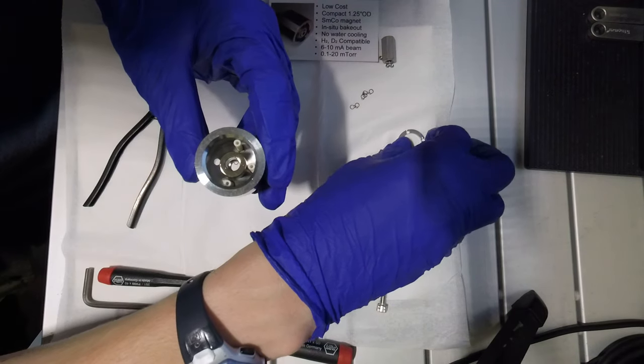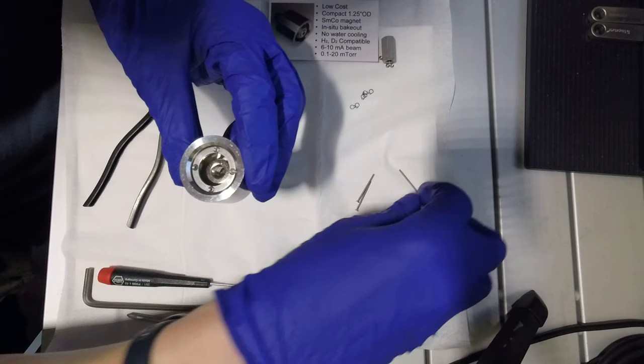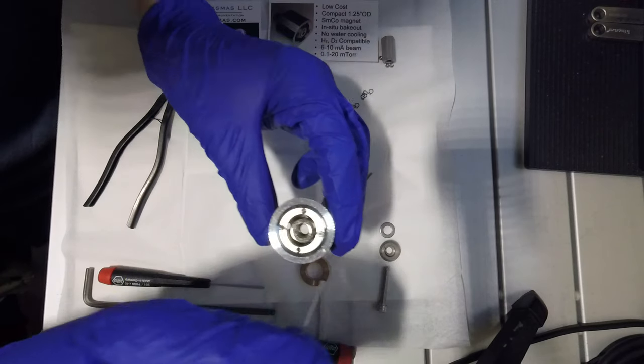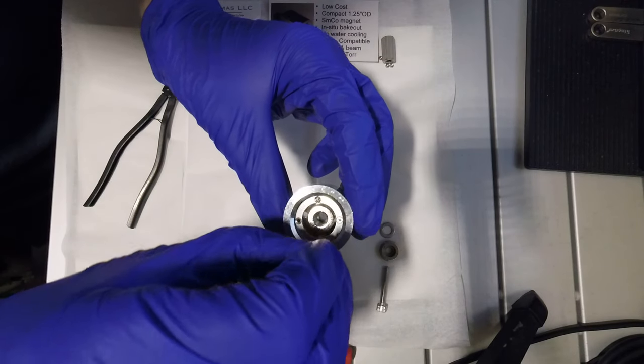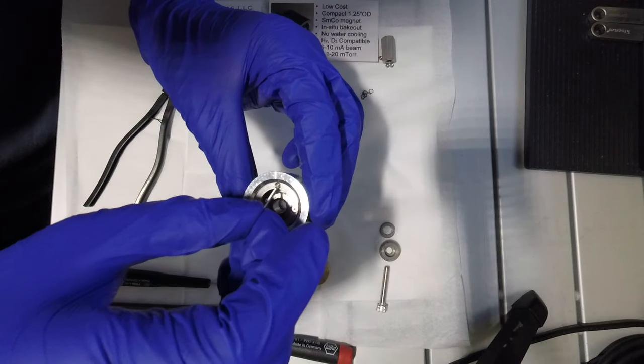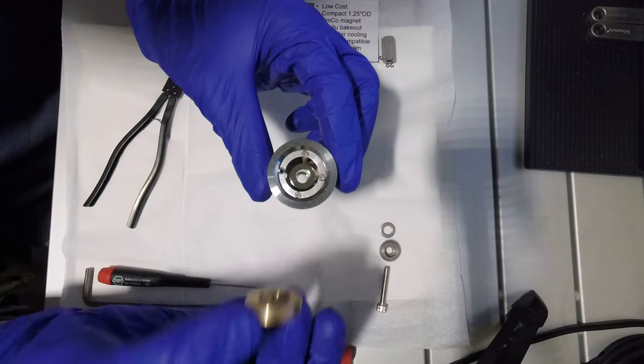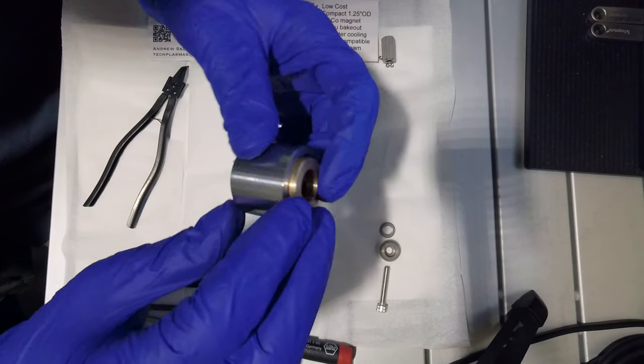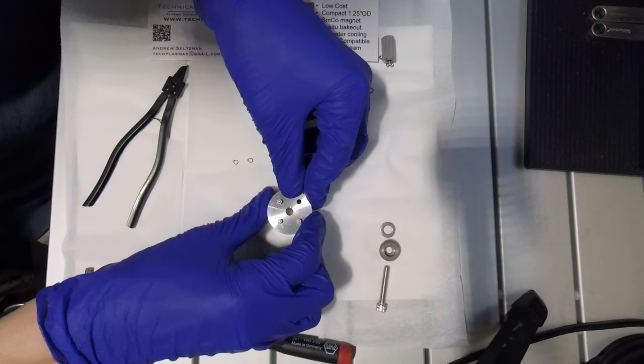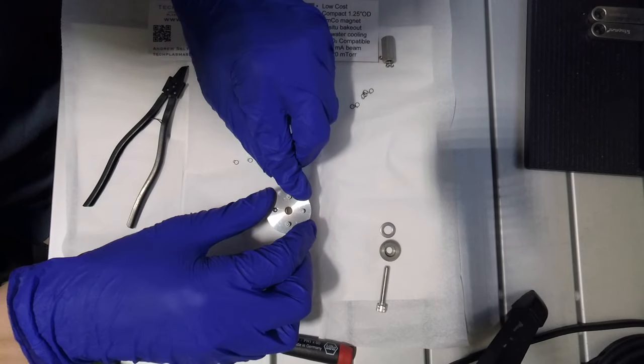Once the three insulators are inserted, the anode ring is placed on top of them, and three flat head screws are inserted through the insulating supports. A shim bushing is then placed on top of the anode ring, the ion source is turned upside down and pressed against a flat surface. This pushes the circlips down and sets the correct height for the anode ring.